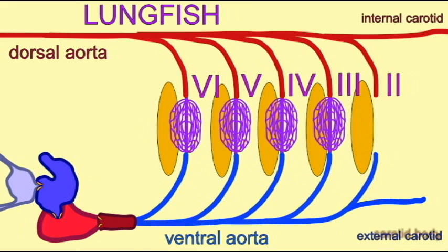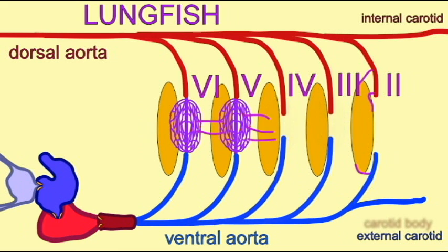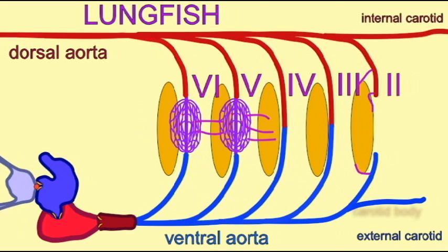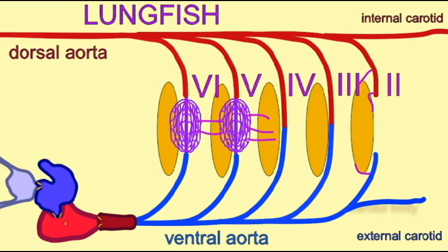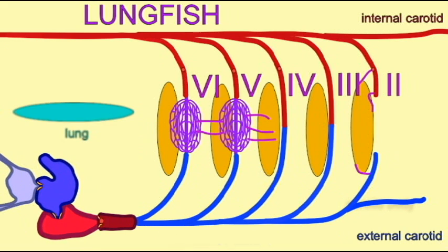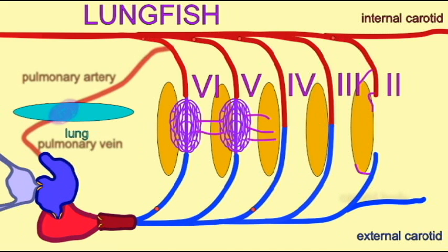Aortic arches 1, 2, and 5 are completely lost. Aortic arch 3 has been converted into the carotid arch, where the common carotid joins an internal carotid, which was once connected to the dorsal aorta, and an external carotid, once connected to the ventral portion.